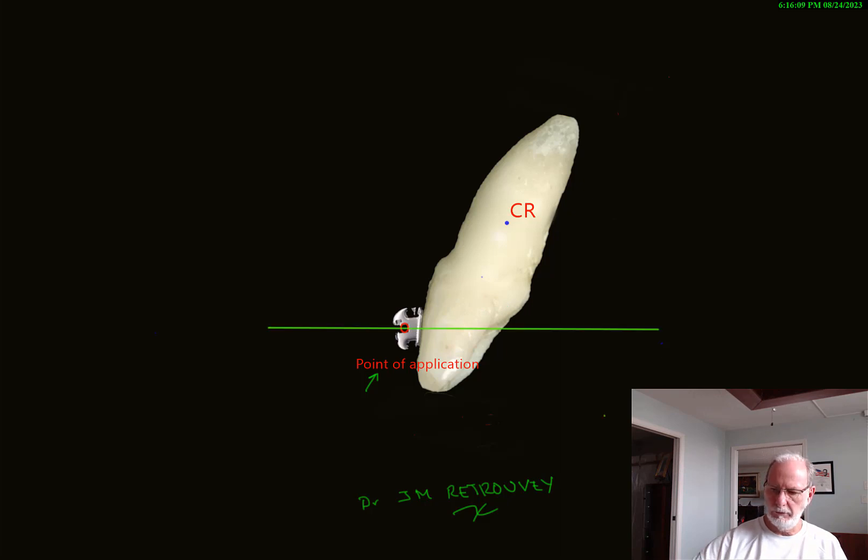Then we'll define what we call the line of action of the force, which is this one, LOA. It's a super important concept because this gives you the idea where the force will be placing its amplitude, or the direction of the force will be defined by the line of action. And let's put the force on at the same time. You can see now that I've placed a 100 gram or 1 newton force in a lingual direction that follows the line of action of the force.